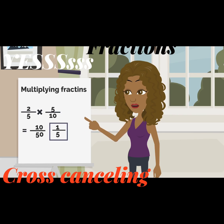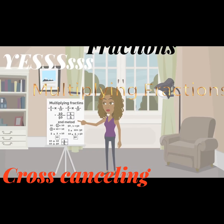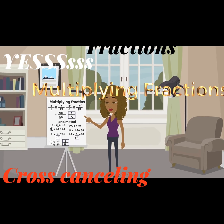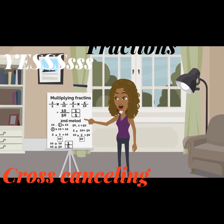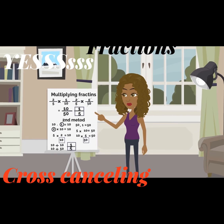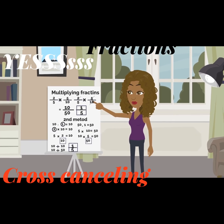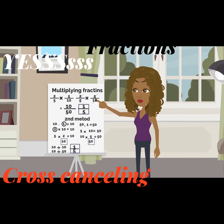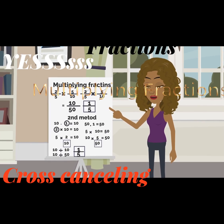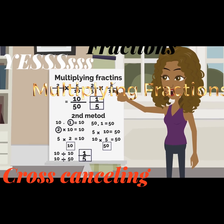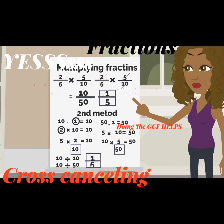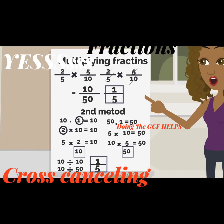Now we're going to get to the second method, which is multiplying straight across. We're basically multiplying these two fractions straight across and then we're going to simplify the result by finding the GCF of 10 and 50.